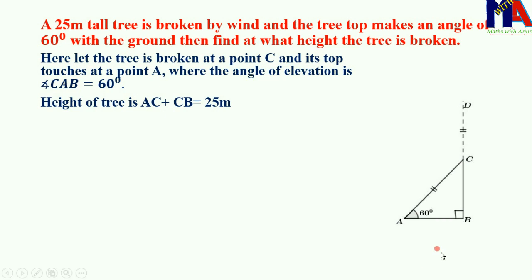AC is equal to CD. You can see BD is equal to 25 meters, but BC plus CD is equal to BC plus CA. So AC plus CB is equal to 25 meters.